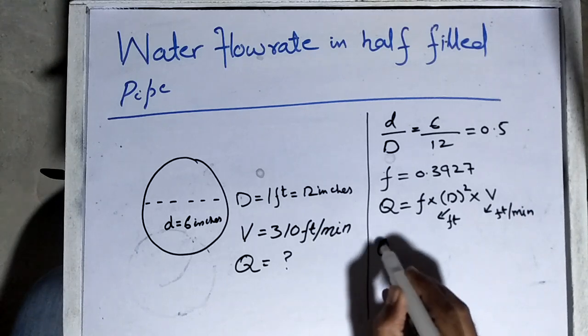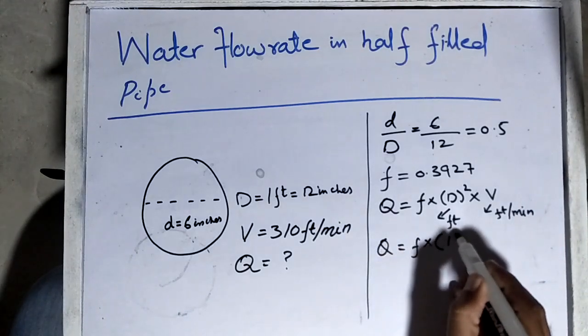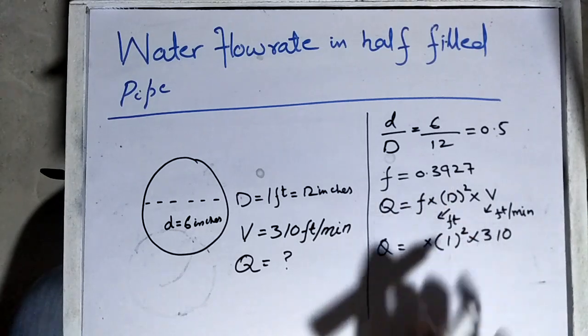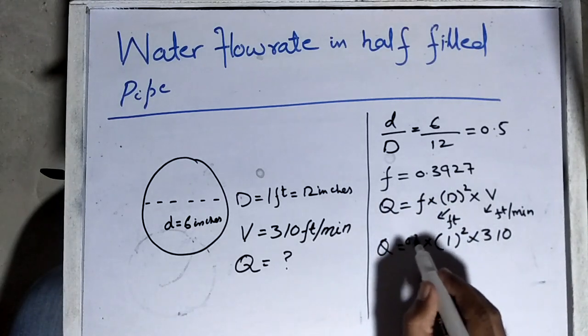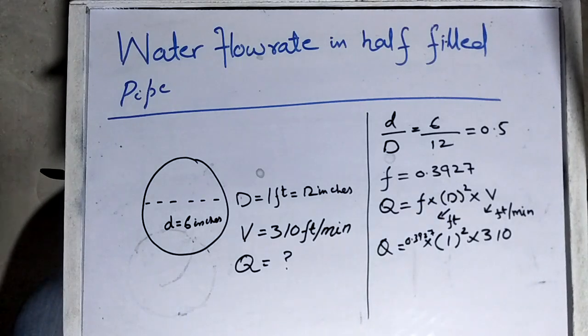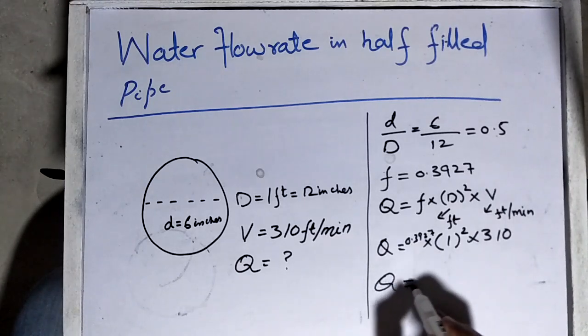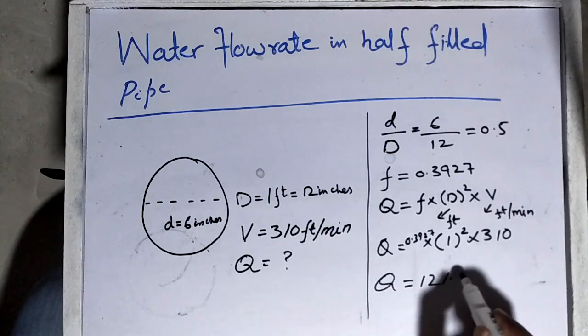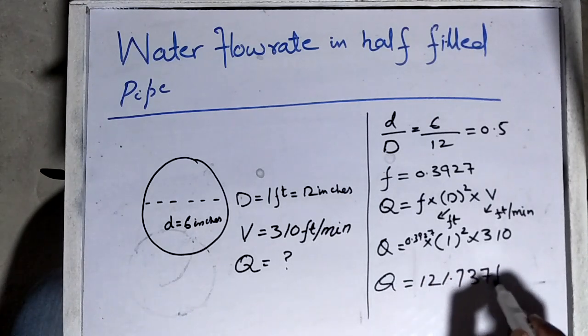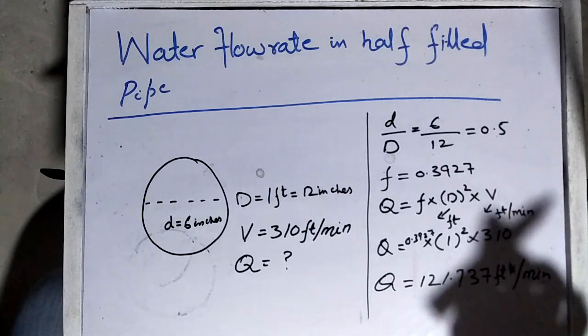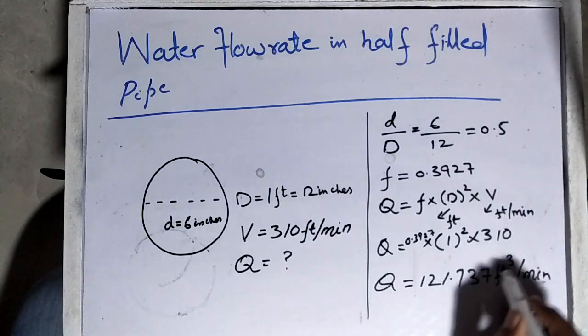Putting in the values: diameter of pipe is 1 foot, velocity is 310, and factor is 0.3927. By multiplying 0.3927 by 1 squared by 310, we get the answer 121.737 cubic feet per minute.